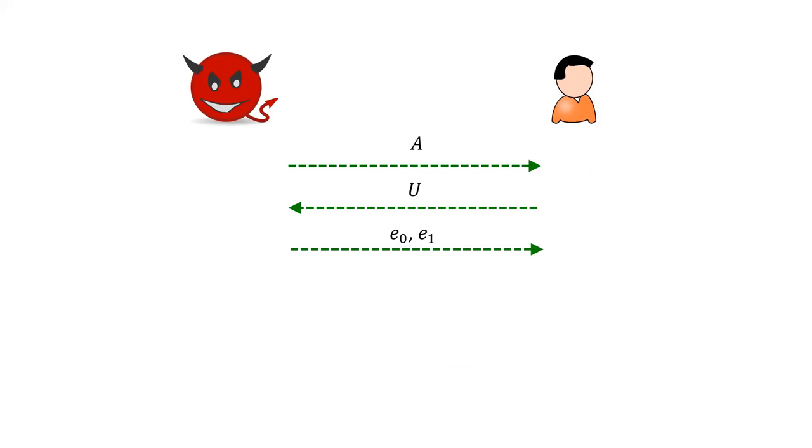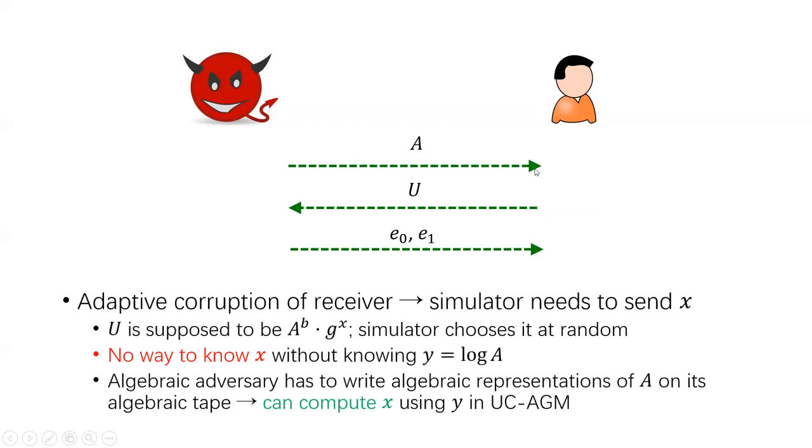If you want to prove the security of this protocol, the problematic scenario is the sender is statically corrupted and the receiver is adaptively corrupted. In this case, when the receiver is corrupted, the simulator must send the random nonce X to the adversary, which explains how the group element U is computed. This requires the simulator to know the discrete log of the group element A, which is Y. But the simulator has no way to know this, so it is stuck.